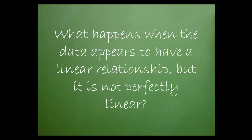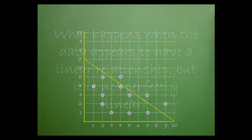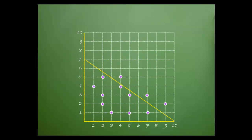What happens when the data appears to have a linear relationship, but is not perfectly linear? We would get a graph that looks something like this. You can visually see that the data has some correlation and that it's negative. The r value for the relationship between this set of data would be between minus 1 and 0.